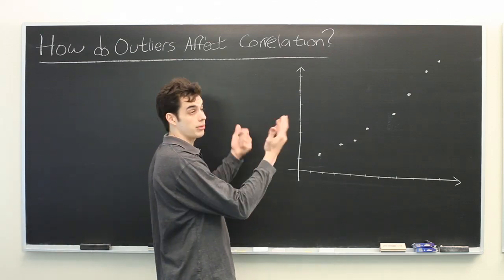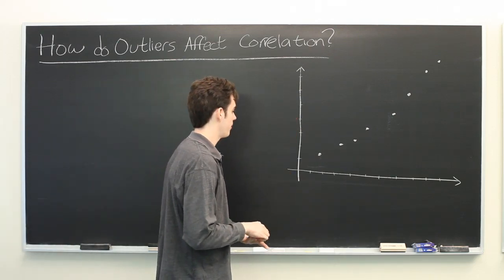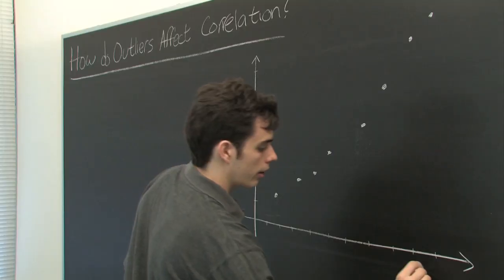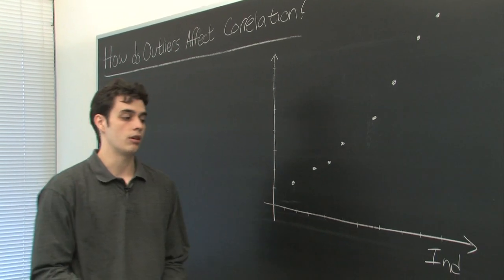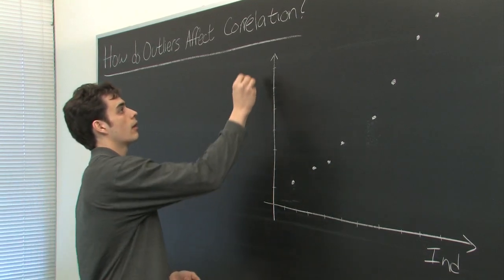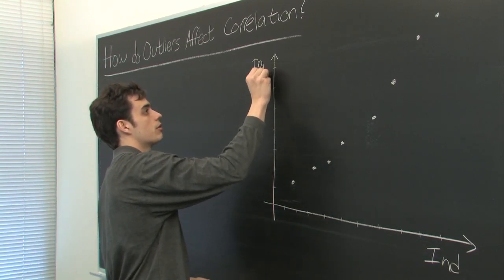So here we have some data set represented in a scatter plot and we determine that this axis represents our independent variable and this axis represents our dependent variable.